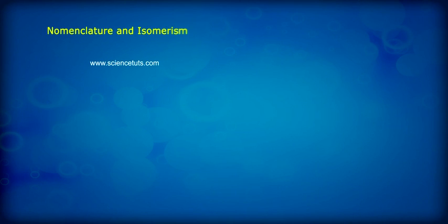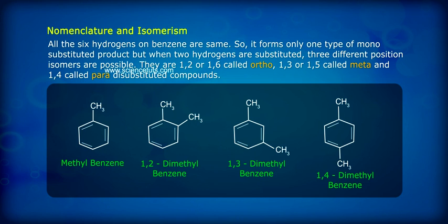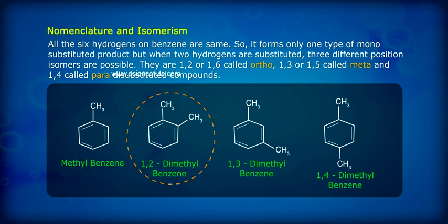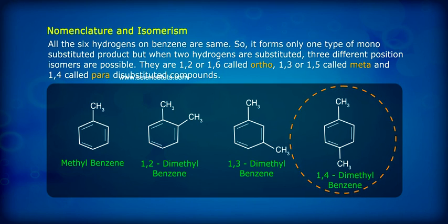All six hydrogens on benzene are the same, so it forms only one type of monosubstituted product. But when two hydrogens are substituted, three different position isomers are possible: one-two or one-six called ortho, one-three or one-five called meta, and one-four called para disubstituted compounds.